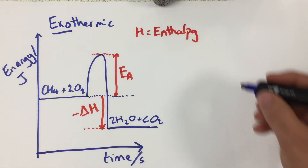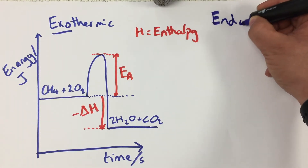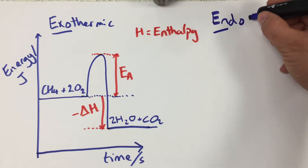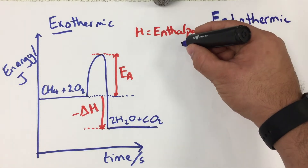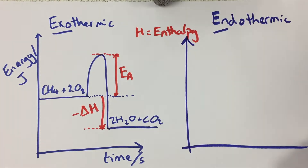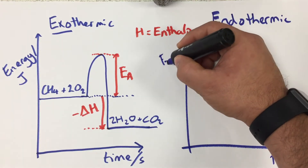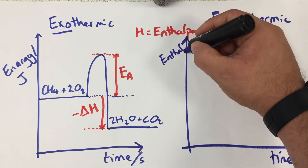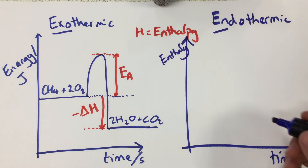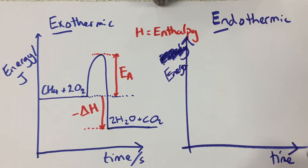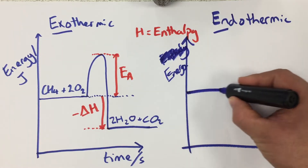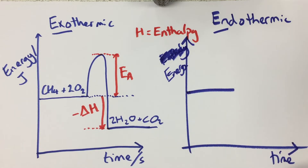To understand the difference, for an endothermic reaction — 'endo' meaning in — an endothermic reaction is one where heat energy is taken in from the surroundings. Again we have our energy profile diagram with time and energy, or enthalpy, on the axes. Just like before, reactants will have a certain starting point on our diagram.